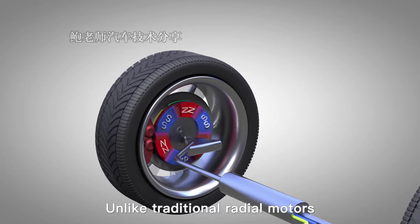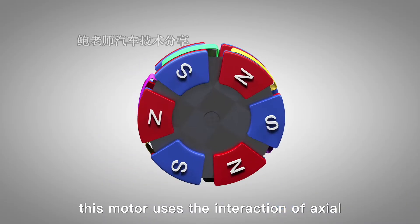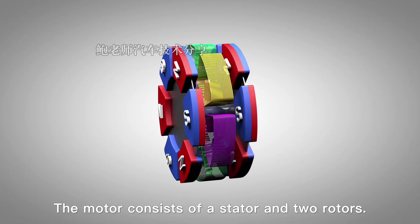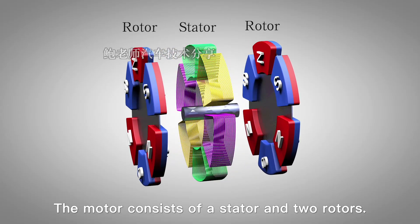Unlike traditional radial motors, this motor uses the interaction of axial magnetic flux to achieve rotation. The motor consists of a stator and two rotors.